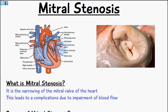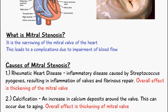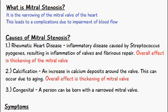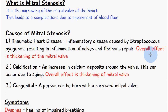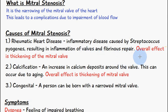The causes of mitral stenosis: number one can be rheumatic heart disease. This is an inflammatory disease caused by Streptococcus pyogenes, and it results in inflammation of the valves and fibrinous repair. The overall effect of rheumatic heart disease is thickening of the mitral valve.